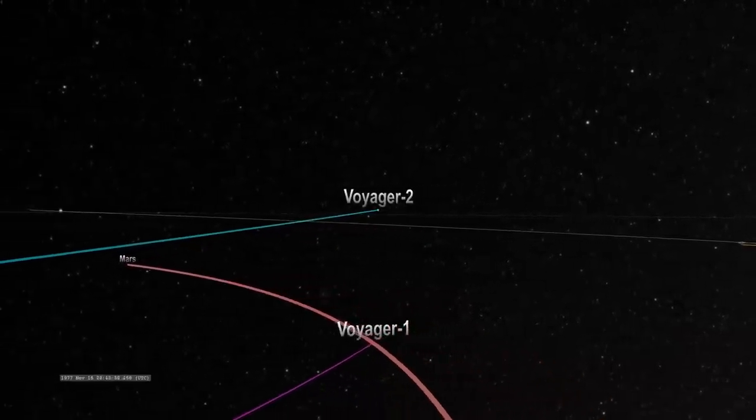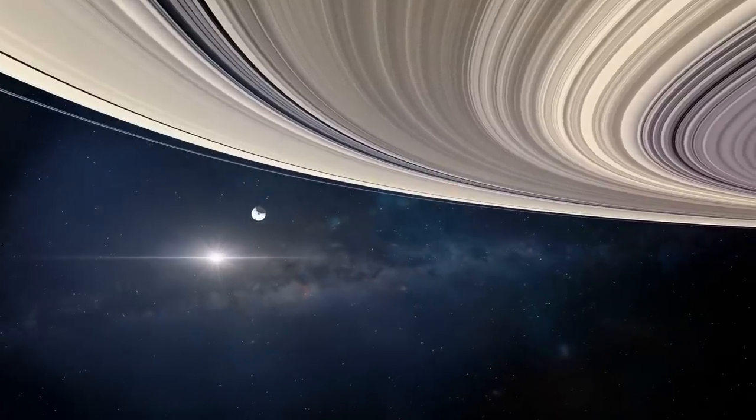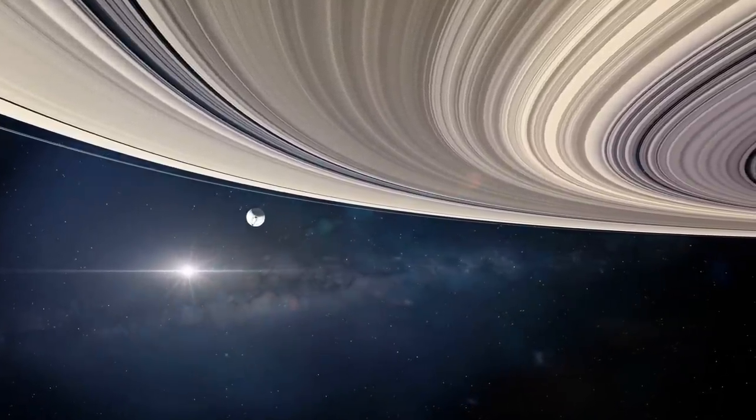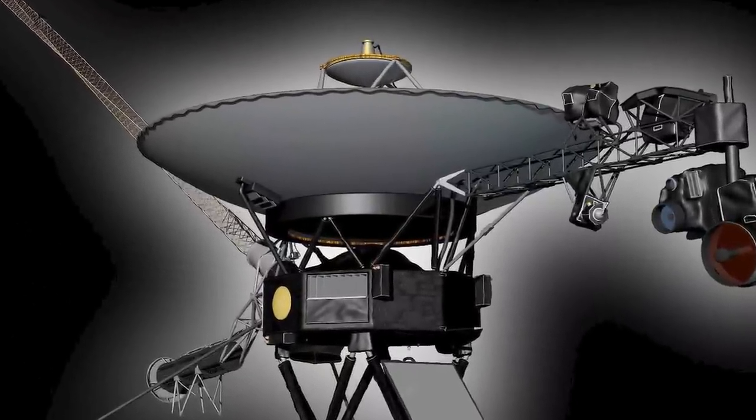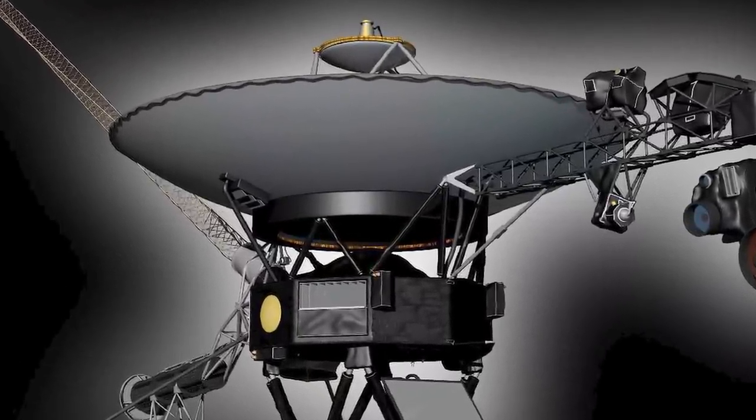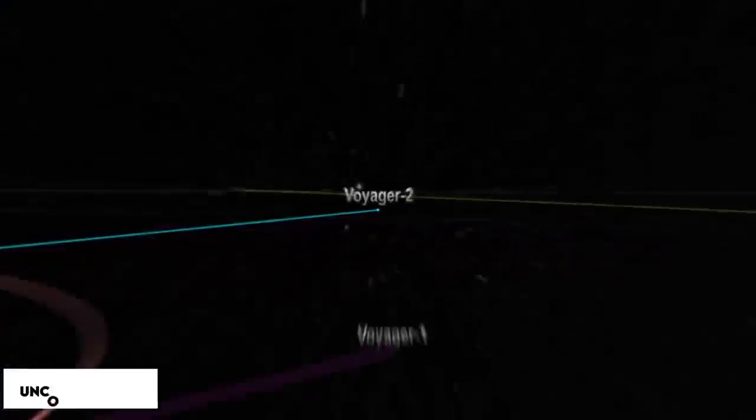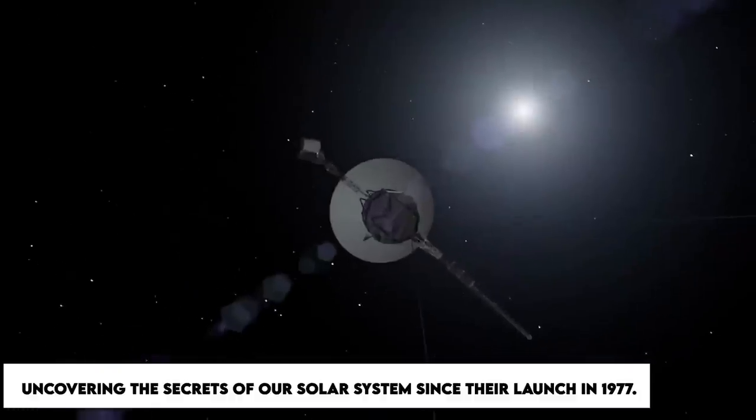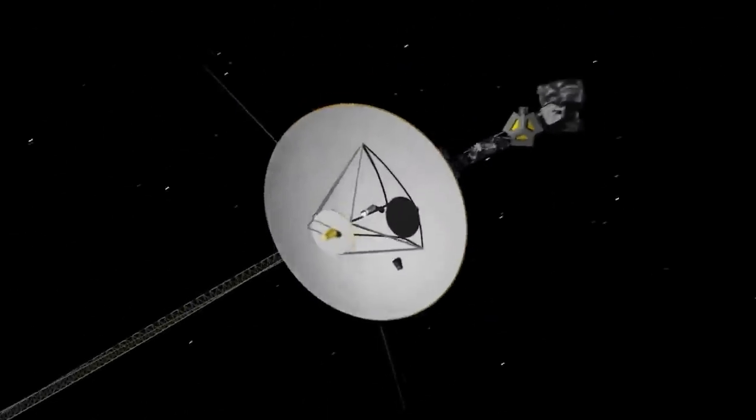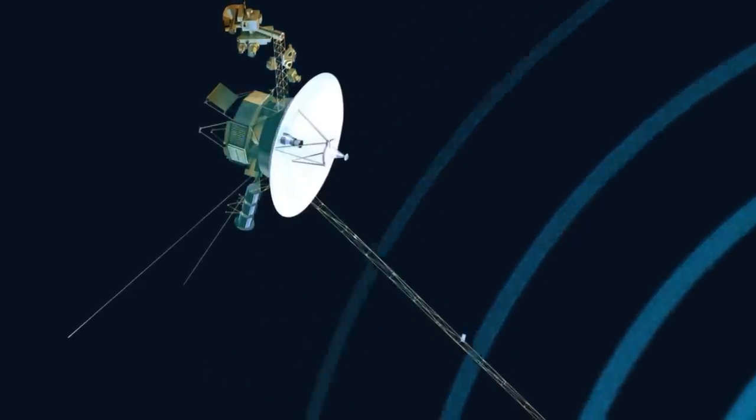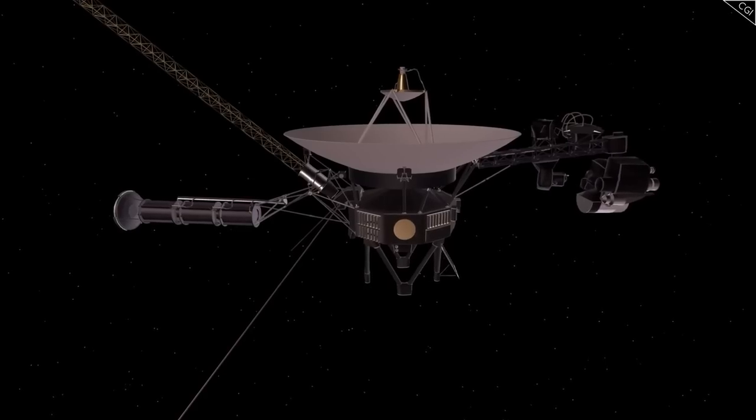At nearly four decades into its journey, Voyager 2 is making scientific discoveries as it enters interstellar space. Take a moment to think about NASA's Voyager probes if you've ever had a day that seemed endless. Voyager 1 and Voyager 2 have been exploring the cosmos and uncovering the secrets of our solar system since their launch in 1977. They have sent us a wealth of information about the cosmos in that period. Both probes have now entered interstellar space well beyond the orbit of the farthest known planet.